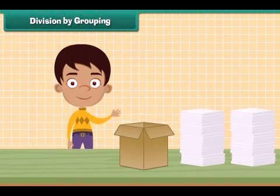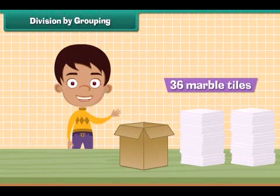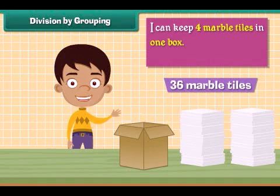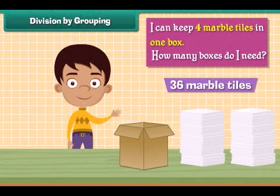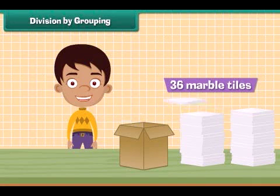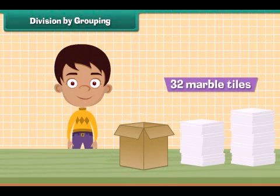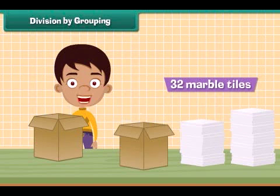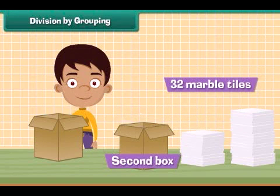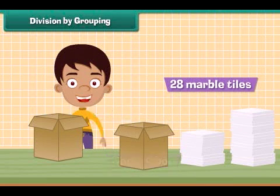Division by grouping. I have 36 marble tiles. I can keep 4 marble tiles in one box. How many boxes do I need? 4 marbles in the first box. Here 32 marble tiles are left. 4 marble tiles in the second box. Now 28 marble tiles are left.